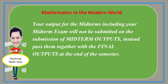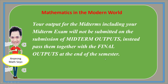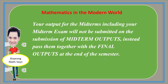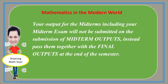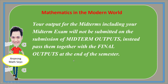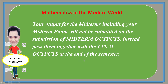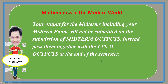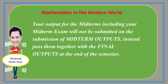Instead, pass them together with the final output at the end of the semester. You have one semester to finish all modules 1 to 7. Organize your paper as follows: Module 1, Module 2, Module 3, Module 4, then the midterm exam. Next, Module 5, Module 6, Module 7, then the final exam. All modules including the exams will be put in just one long folder.